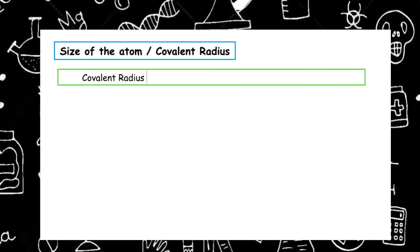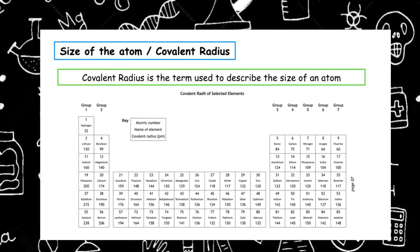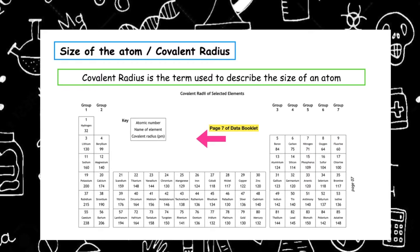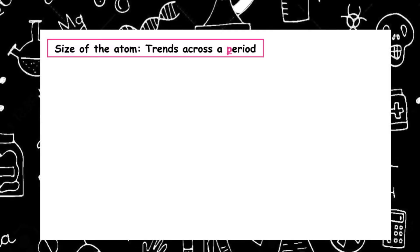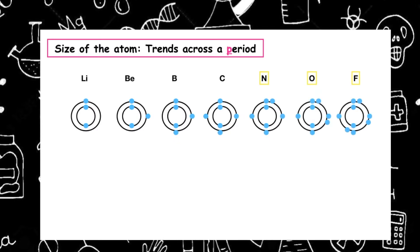The covalent radius is a term used to describe the size of an atom. On page 7 of the updated chemistry data booklet, it gives you information about each of the elements and its covalent radius. Let's have a look at the trends across a period using page 7 of our data booklet.